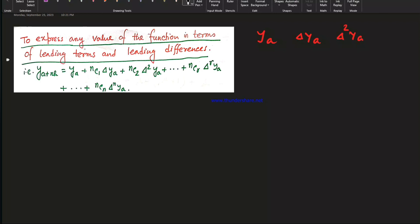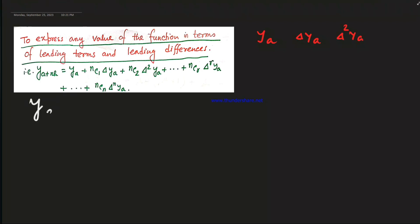We have found that y(a + nh) equals y_a, plus nC1 times delta y_a, plus nC2 times delta squared y_a, plus nCr times delta y_a, up to nCn times delta^n y_a. This is Newton's forward difference interpolation formula.